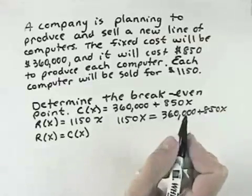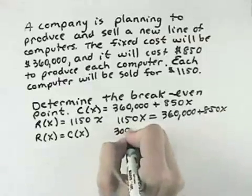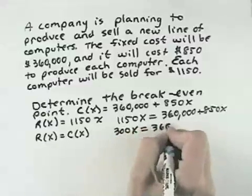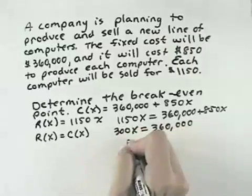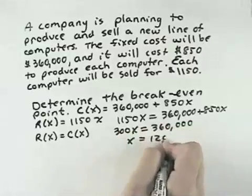from both sides to have 300x equals $360,000. Dividing by 300, we see x equals 1,200.